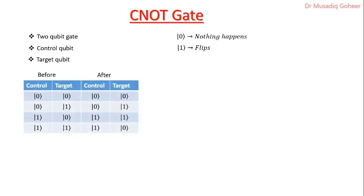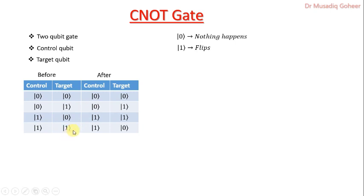Now let us look at the truth table of the control NOT gate, which shows four possibilities. If control qubit is 0 and target is 0, after applying the CNOT gate both remain the same. If control qubit is 0 and target is 1, the state of the target qubit also remains the same. If control qubit is 1 and target qubit is 0, the state of the target qubit is flipped to 1. If control qubit is 1 and target qubit is 1, the target qubit state is flipped to 0. So whenever the control qubit is 1, the state of the target qubit is flipped.